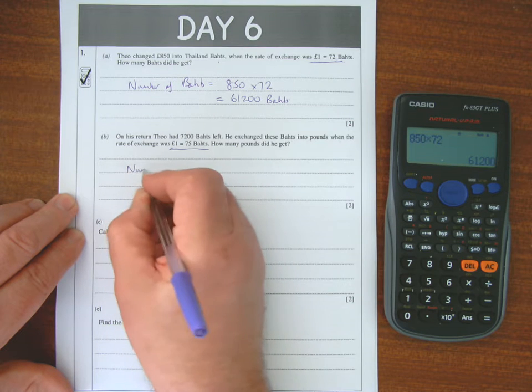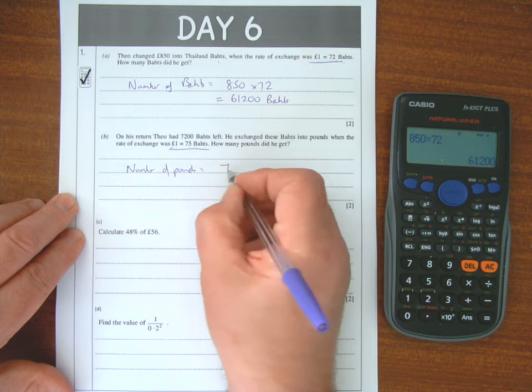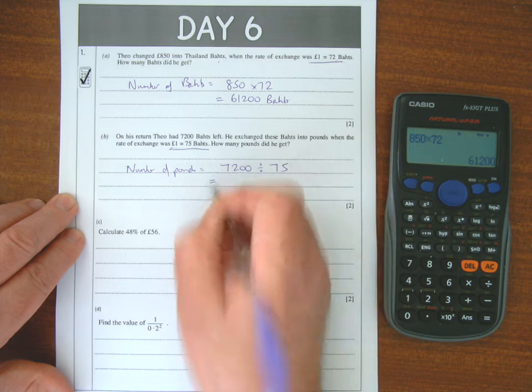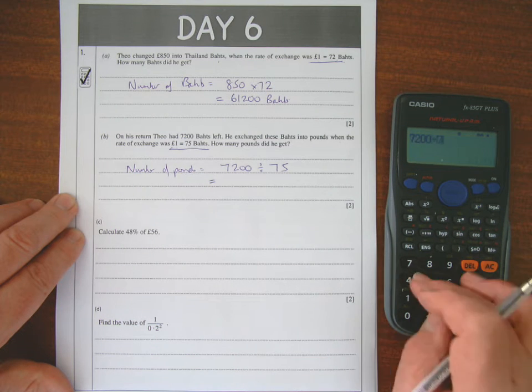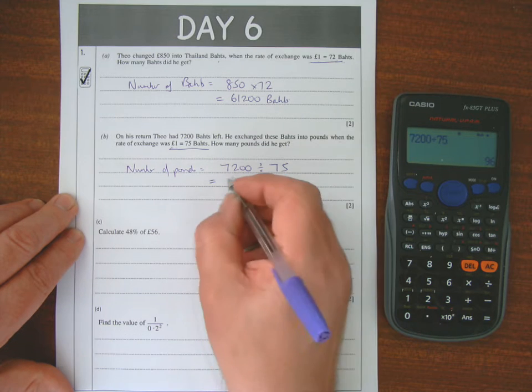So the number of pounds is 7,200 divided by 75. That gives me 96.